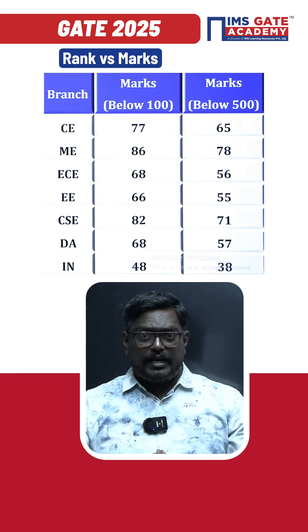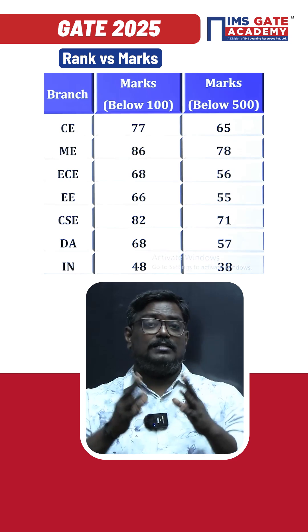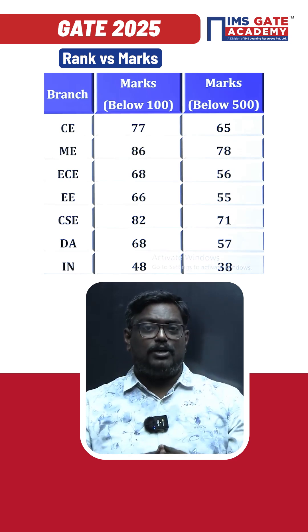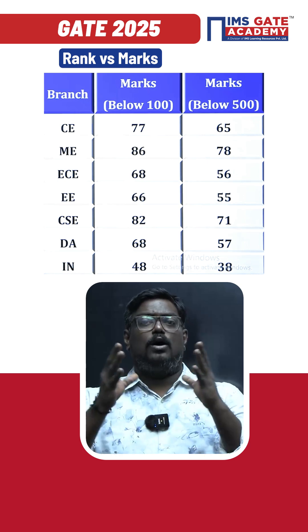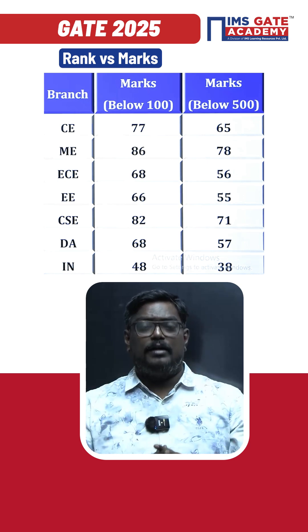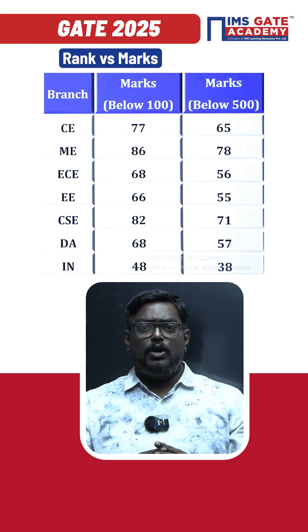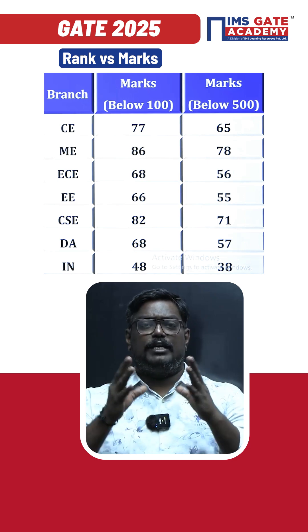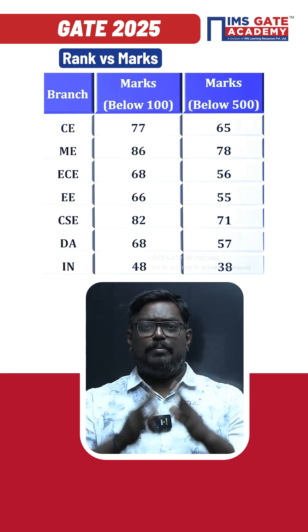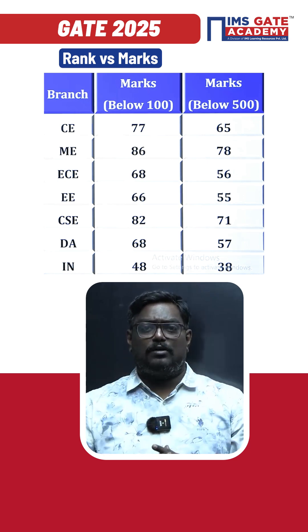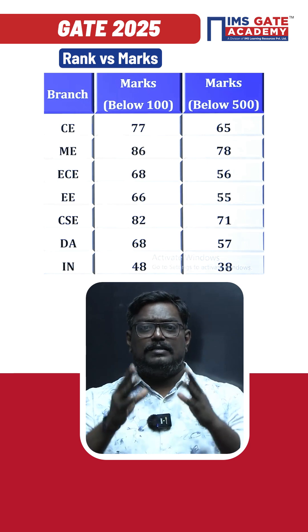As we are inching towards the GATE exam, let us understand what should be your marks to secure a rank below 100 or below 500 for the respective branches. First, we consider civil engineering. For civil engineering, below 100 you should secure marks of 77, and for below 500 you should secure a mark of 65.